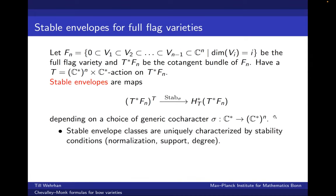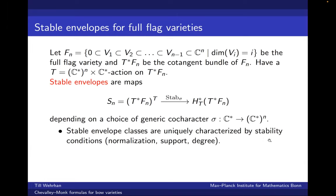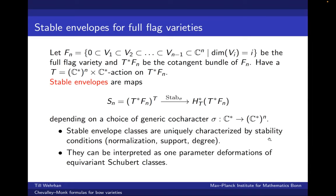Stable envelopes are uniquely determined by certain stability conditions, namely normalization, support, and a degree condition. Since the T-fixed points of the cotangent bundle of the flag variety are just the symmetric group, we can also view stable envelopes as maps from the symmetric group into the equivariant cohomology ring. These stability conditions are pretty similar to those appearing in equivariant Schubert calculus. In fact, stable envelopes and Schubert classes are closely connected, as stable envelopes can be interpreted as one-parameter deformations of equivariant Schubert classes. Via a certain limit argument, the stable envelope classes specialize to the equivariant Schubert classes on the full flag variety.